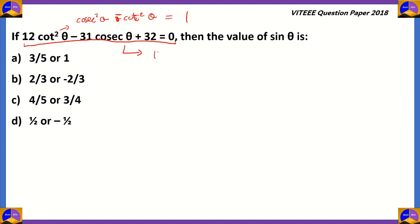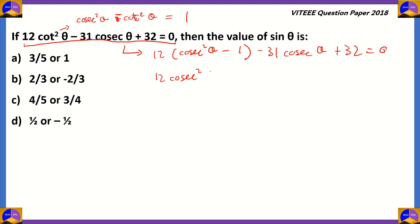So we write 12(cosec²θ - 1) - 31cosecθ + 32 = 0. Multiplying through gives 12cosec²θ - 31cosecθ + 32 - 12 = 0, which simplifies to 12cosec²θ - 31cosecθ + 20 = 0. Now we solve this quadratic equation where cosecθ is our variable instead of x or y, so we split the middle term.